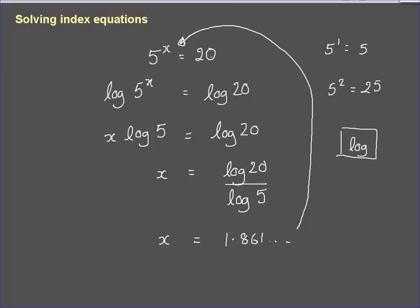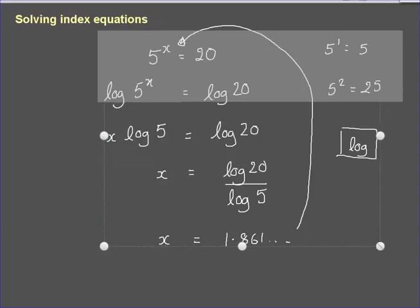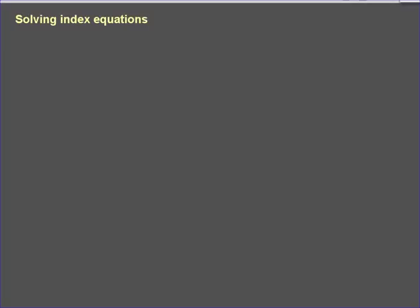So there we go, taking a logarithm of both sides in order to deal with an equation that has an index in. Let me just put that to one side and deal with one more slightly more awkward equation. For example, 6 to the power of x plus 2 is equal to 7 to the power of x.